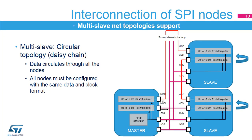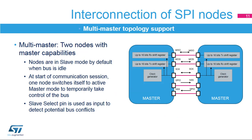Another multi-slave configuration is the circular topology, where all the data inputs and outputs of the nodes are connected together in a closed serial chain. A common slave select signal is used as communication occurs at the same time. This is why all the nodes have to keep the same data and clock format configuration. When the slave SPI nodes are provided by a microcontroller, the internal transmit and receive shift registers are usually physically separated, so the data transferred between them has to be handled by software in this circular mode.